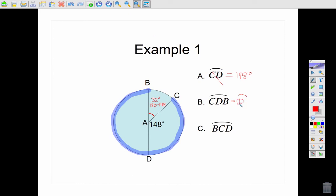CDB is arc CD plus DB. I know arc CD is 148 degrees, and arc DB is 180 degrees. So CDB is 328.